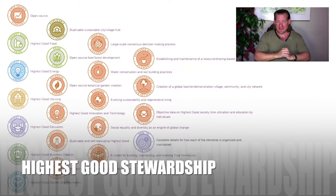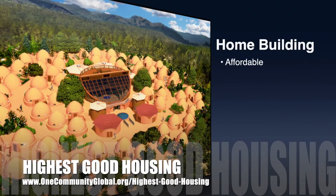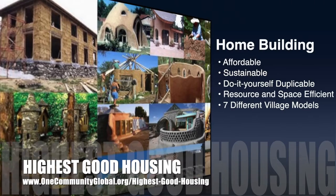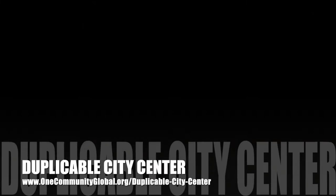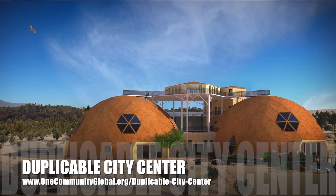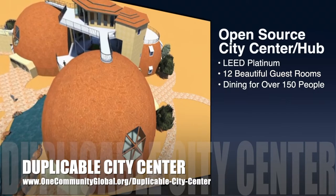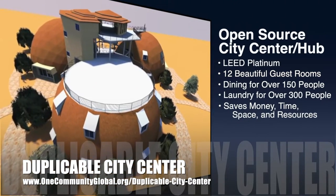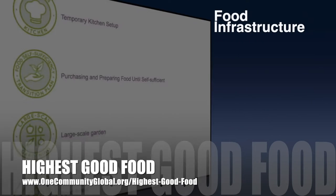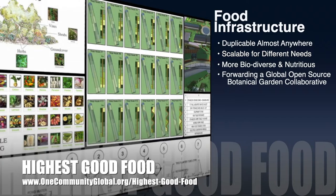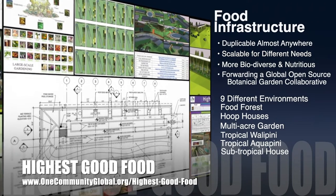One Community's approach to highest good housing is eco-artistic home building that is affordable, sustainable, do-it-yourself, duplicable, resource- and space-efficient, and consists of seven different sustainably constructed village models. One Community is also creating an open source duplicable city center designed to be LEED Platinum certified, providing 12 guest rooms, dining for over 150 people, and laundry and recreation space for over 300 people — all while saving money, time, space, and resources. The highest good food approach is duplicable almost anywhere, scalable, more biodiverse and nutritious, and includes nine different free shared and duplicable growing environments.